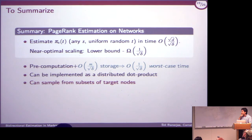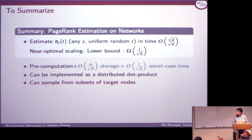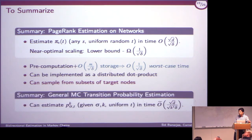Theory summary: given any Markov chain with starting distribution sigma, for PageRank — given source and target — I can estimate PageRank up to accuracy delta in time 1/√delta. I can generalize this to arbitrary Markov chains. The idea extends the same way, with some state expansion.